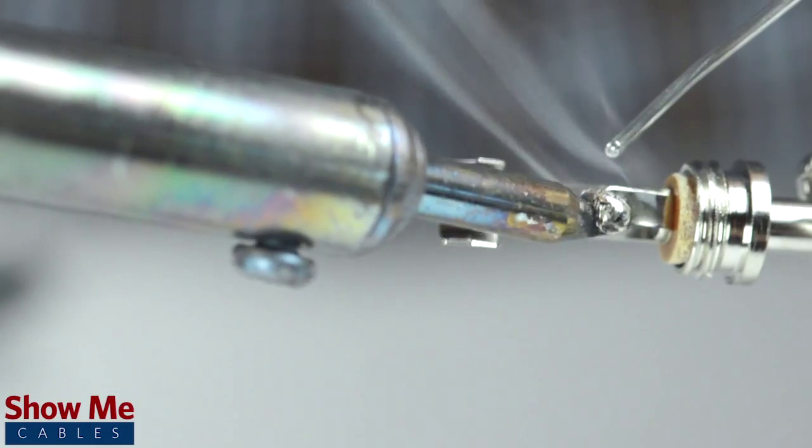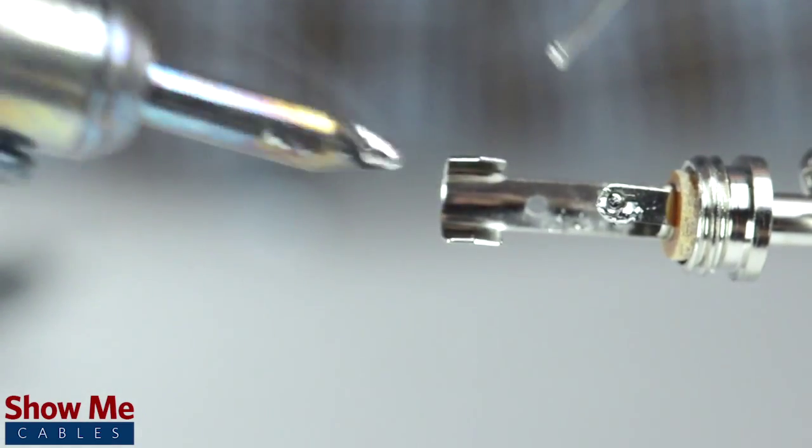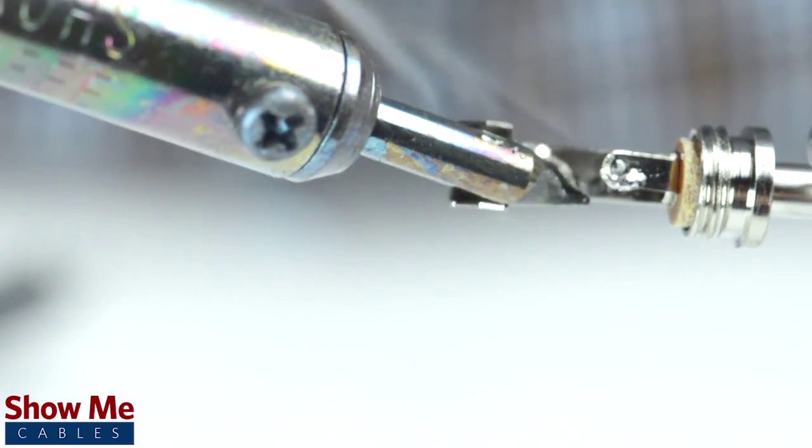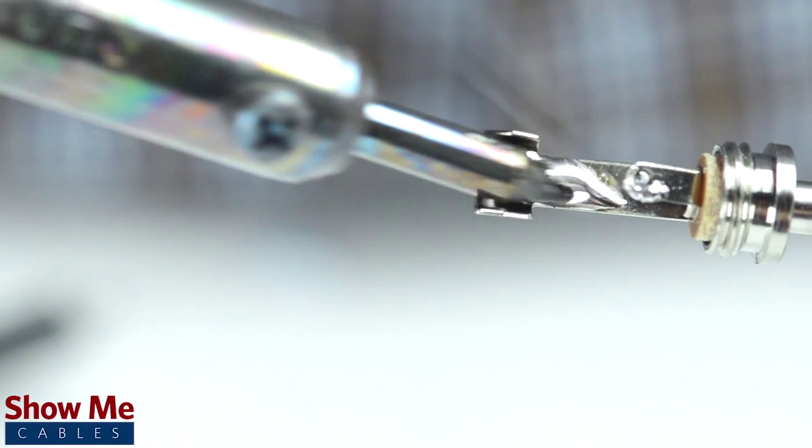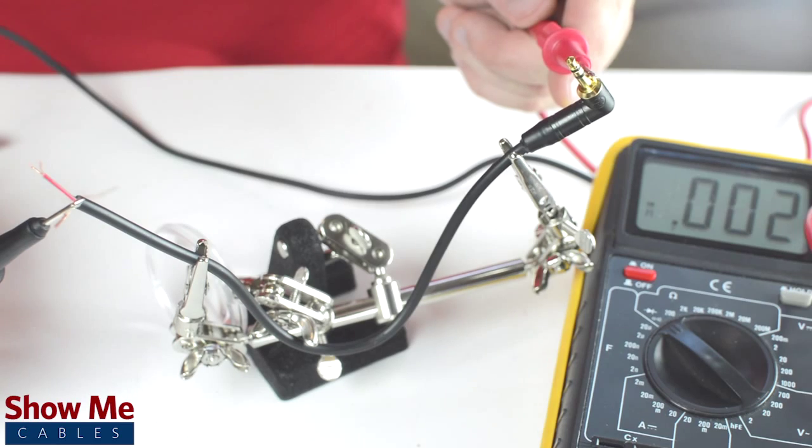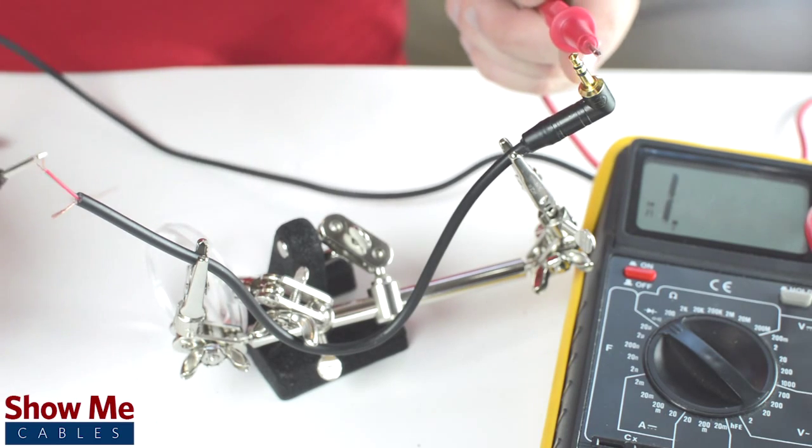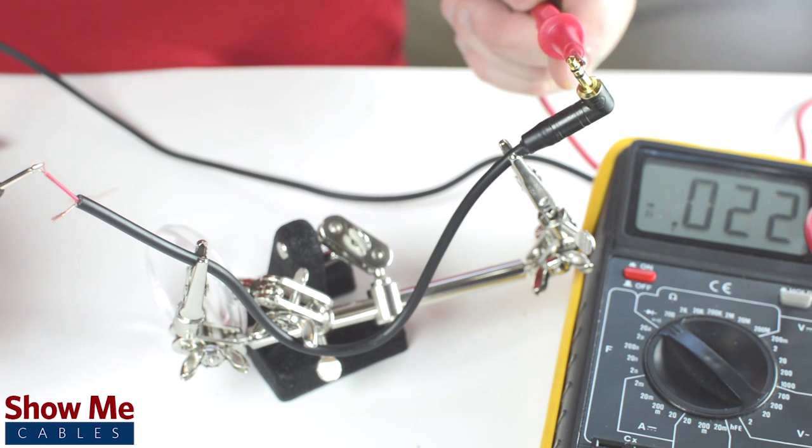Take the connector and with a vise or helping hands, tin the solder points on the connector. The sleeve is the longest piece of metal coming out of the back of the connector. If you are unsure of which solder point corresponds to the tip or sleeve, you can use a multimeter to check continuity.